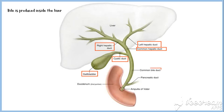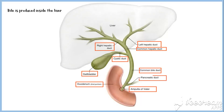Union of the common hepatic duct and the cystic duct forms the common bile duct, which continues downwards to drain into the second part of the duodenum at the ampulla of Vater. The pancreatic duct also joins the common bile duct just above the ampulla of Vater. Now let's discuss the pathophysiology of gallstone disease.